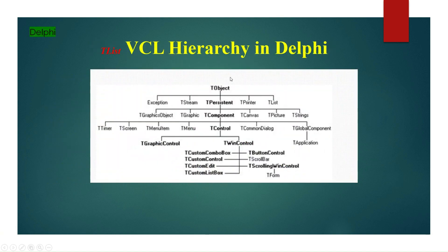Here is the VCL hierarchy in Delphi, showing where TList actually exists. TList is derived directly from TObject, as we can see here.